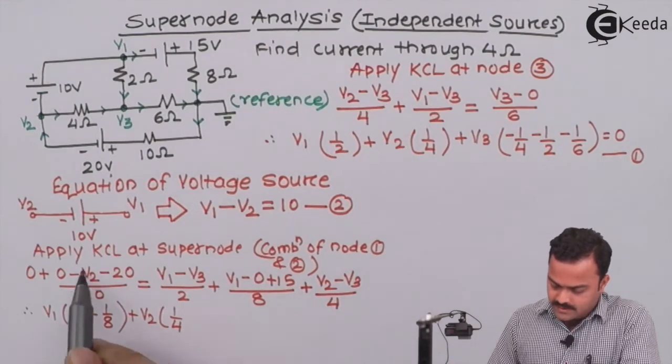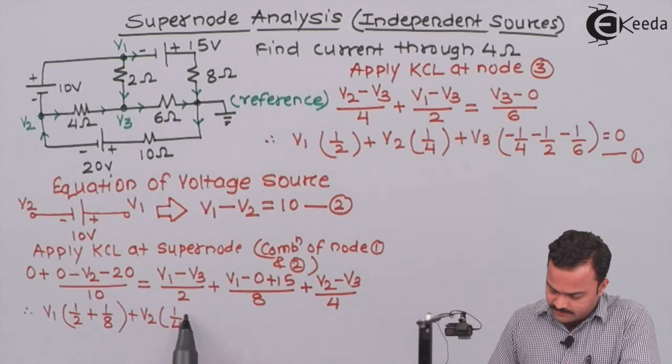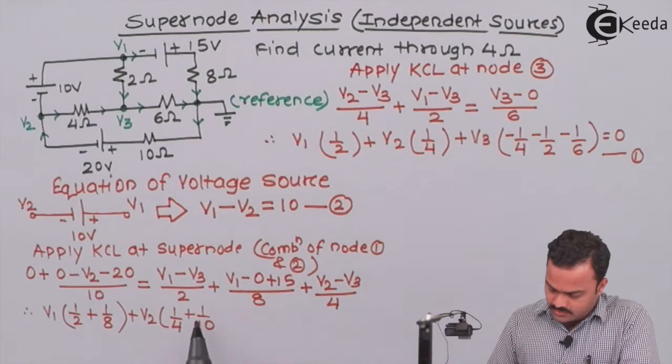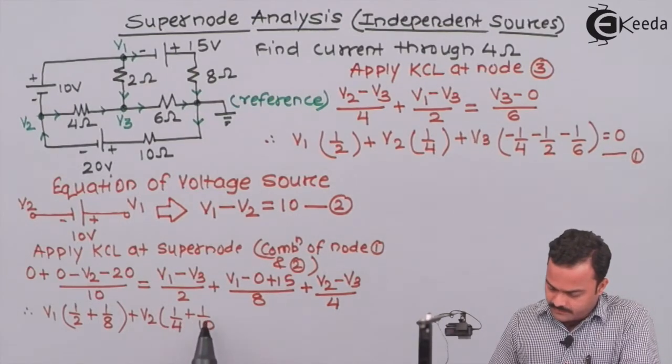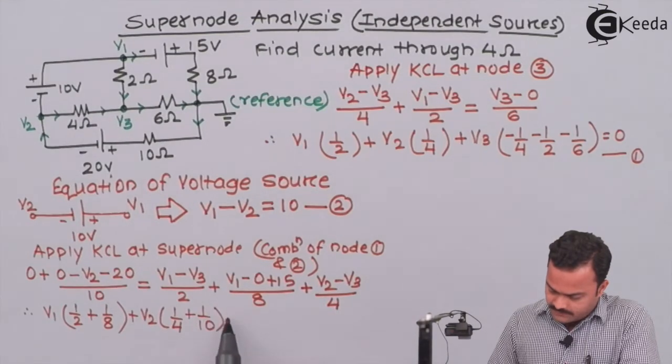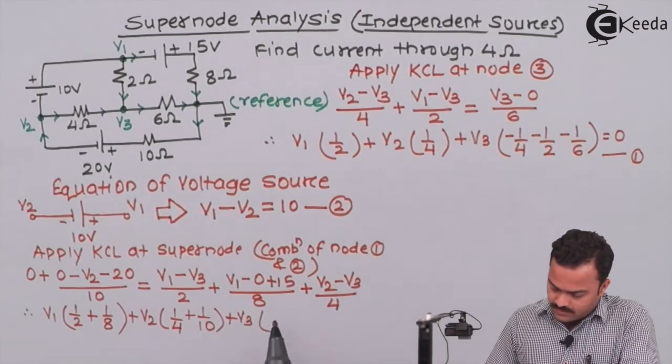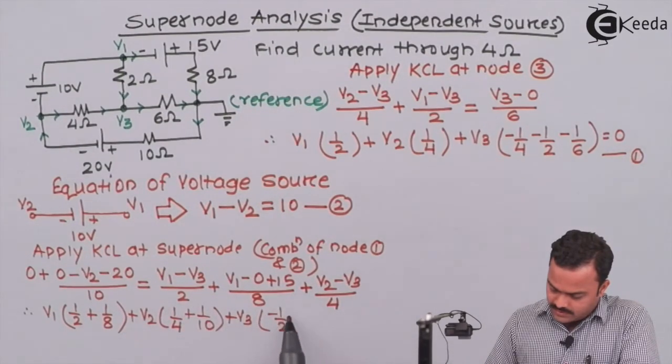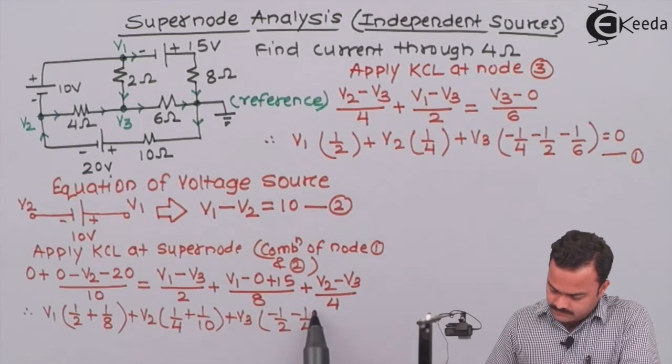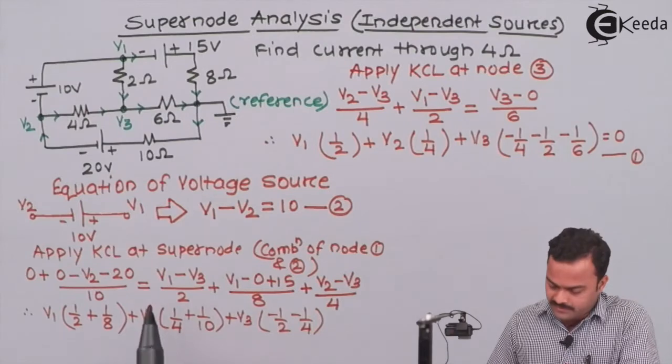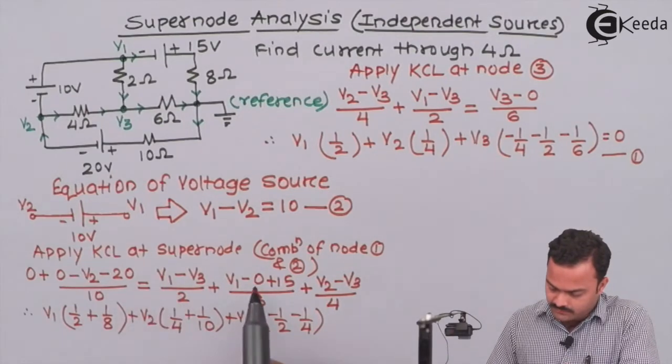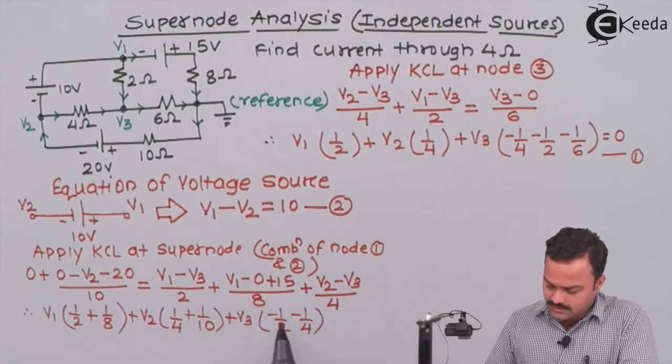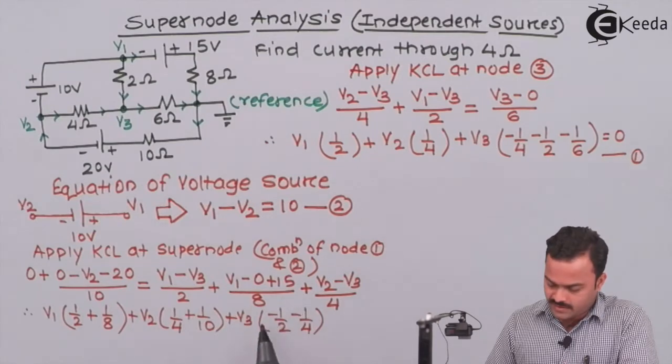Now if I take this term on this side, I will get one more coefficient, that is 1 by 10. So we got two coefficients for V2. And for V3, we have minus 1 by 2 and here minus 1 by 4. So let's count all the coefficients. Basically, there are six terms: two for V1, two for V2, and two for V3. So all the coefficients we have taken in the equation.